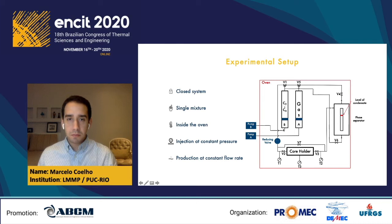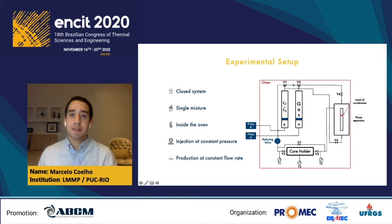Here is how the experiment works: we set pump B to work at constant pressure higher than the dew point pressure, and pump A sets a production flow rate, which increases the cylinder A volume and drops the system pressure, causing cylinder B to inject gas to maintain high pressure. The system flows in this steady-state manner, and we stop the experiment when cylinder A is full of gas. We also have a protocol to remix the gas condensate inside the experiment and bring it back to cylinder B to run a new experiment on a different day.